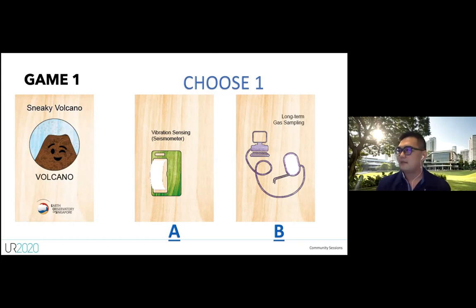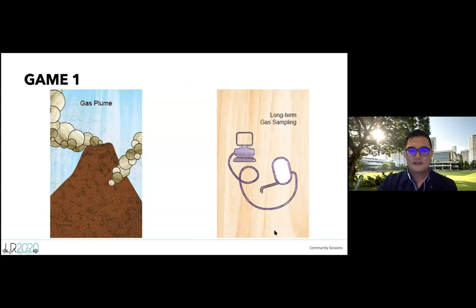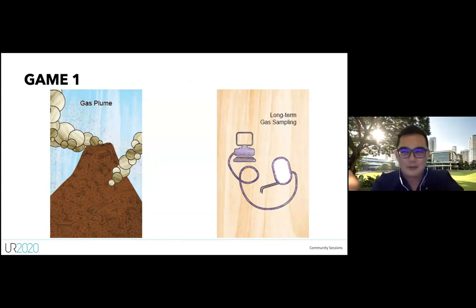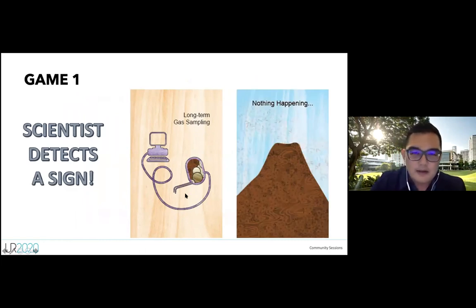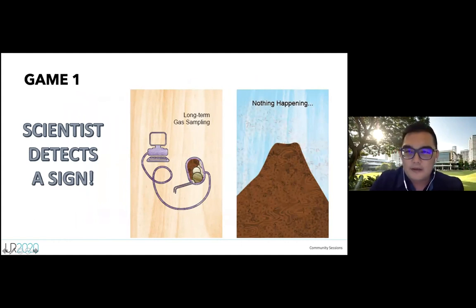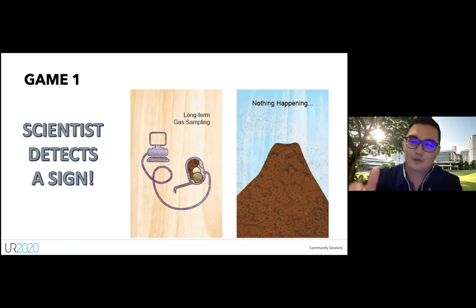Majority chose B — the long-term gas sampling. The card I had hidden was actually a gas plume, so gas is coming out of me. Your equipment card has a cut-out slot, and when you compare it against the normal volcano activity you spotted some gas coming out. Scientists: one, volcano: zero — you detected one sign!